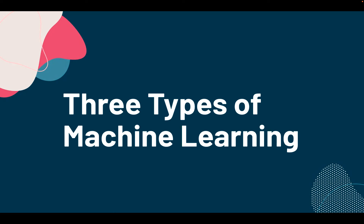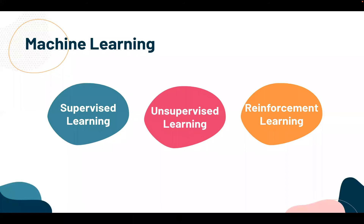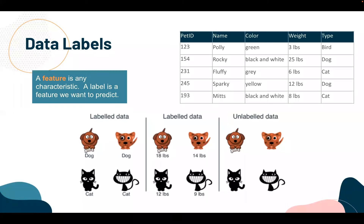This is the second half of the Machine Learning Foundations presentation, picking up where we left off. We're going to talk about the three primary types of machine learning. Under the umbrella of machine learning, there are three general categories of algorithms: supervised learning, unsupervised learning, and reinforcement learning. Rich Sutton, chief scientific officer of Amii, is one of the founders of the reinforcement learning field.